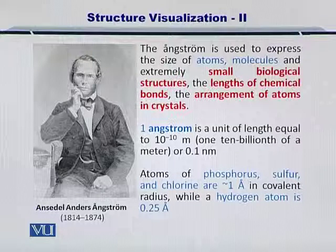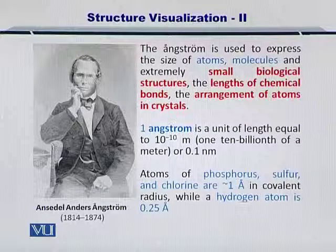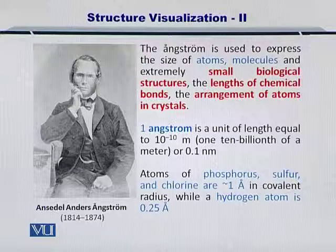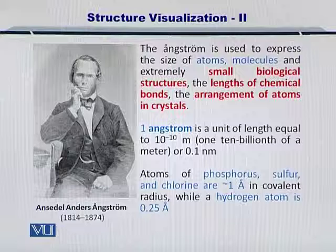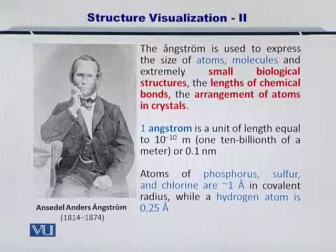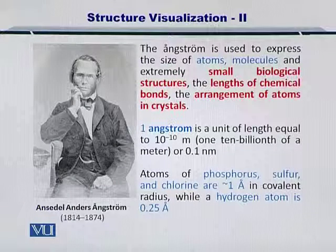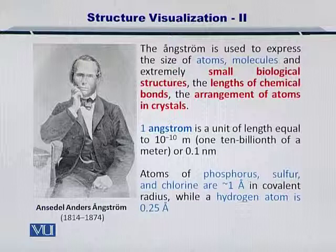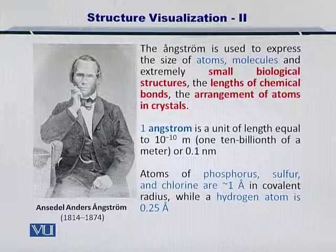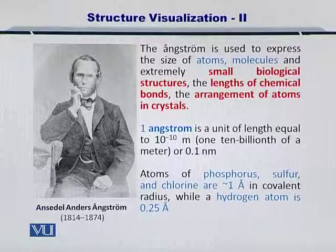Angstrom is used to not only measure the distances between atoms, but also molecules, small biological structures, and the length of chemical bonds. Simply, one Angstrom is about 0.1 nanometers, or one tenth of a nanometer. So it's a very small unit of measurement.